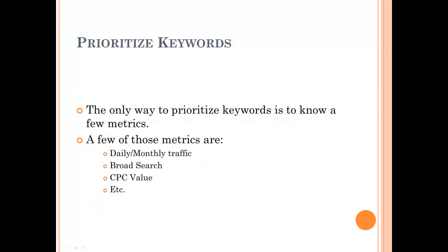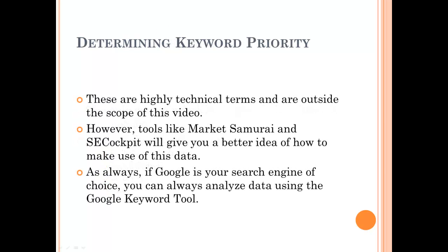The only way to prioritize keywords is to know a few metrics. Among those few metrics are daily and monthly traffic, a broad search value, a cost per click value, and so on and so forth. These are highly technical terms and are outside the scope of this video. However, tools like Market Samurai and SE Cockpit will give you a better idea of how to make use of this data.